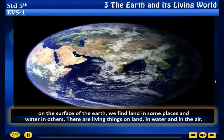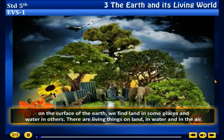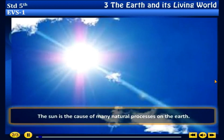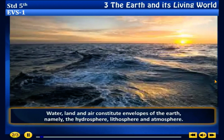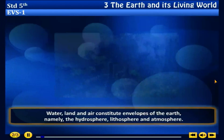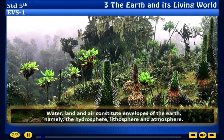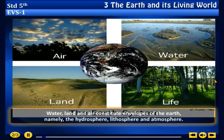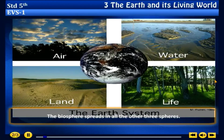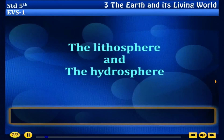On the surface of the earth we find land in some places and water in others. There are living things on land, in water and in the air. The sun is the cause of many natural processes on the earth. Water, land and air constitute envelopes of the earth, namely the hydrosphere, lithosphere and atmosphere. The biosphere spreads in all the other three spheres, including the lithosphere and the hydrosphere.